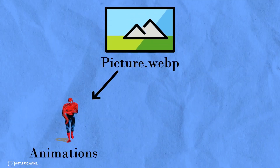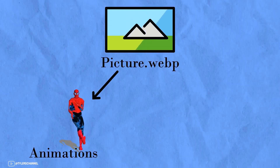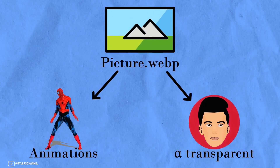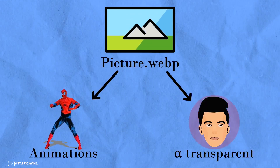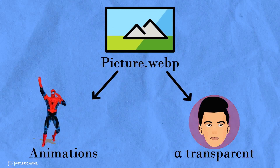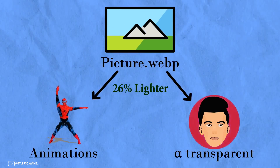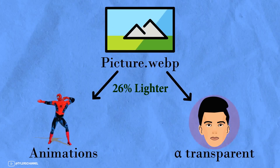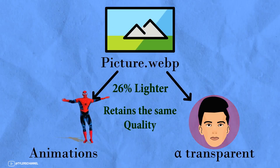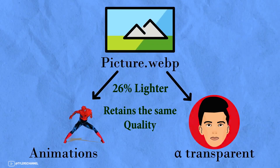It can do animations like a GIF and has alpha transparency support similar to PNGs, except it's 26% smaller in size and retains the same quality.